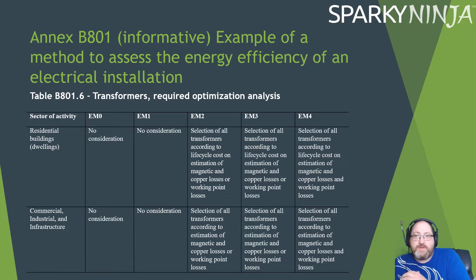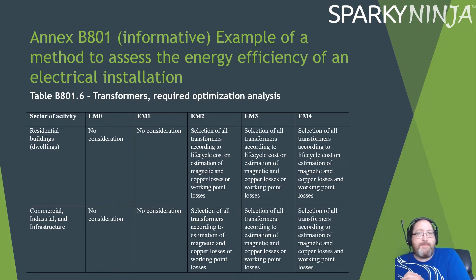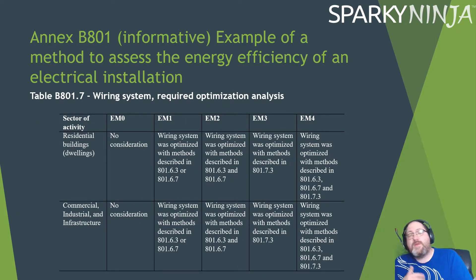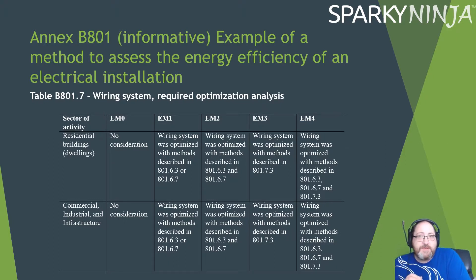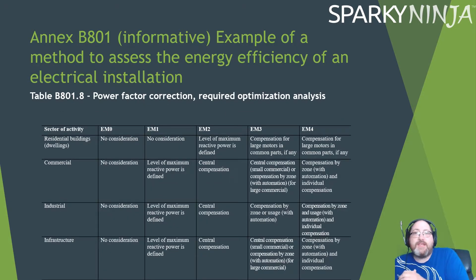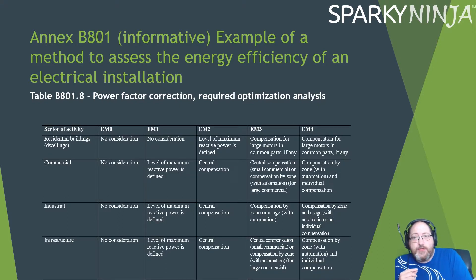For transformers: no consideration gets zero; selection of all transformers according to life cycle cost and estimation of magnetic, copper, and working point losses gets a four. You might get fours in some categories and zeros in others — you tally them up. For wiring systems: no consideration is zero; optimized with the methods described in standards 801, 6367, and 73 gets a four. For power factor correction: no consideration is zero; compensation with zone and individual compensation gets a four.